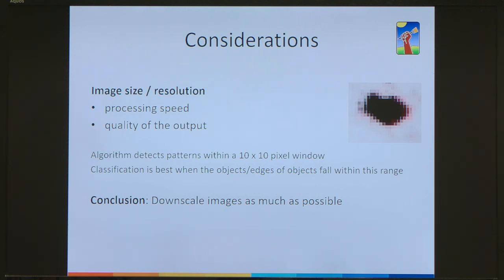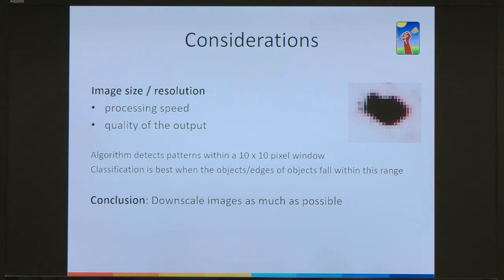One important consideration when doing classification with Elastic is that the resolution of your image has quite a big impact on both the quality of the output and processing speed — the bigger the image, the slower the processing time. Ideally, it's best to resize your images so that the objects or edges of objects fall within the 10 by 10 pixel window, because if outside this range the program won't be able to detect them. My recommendation is to downscale as much as possible without losing the information you're interested in.